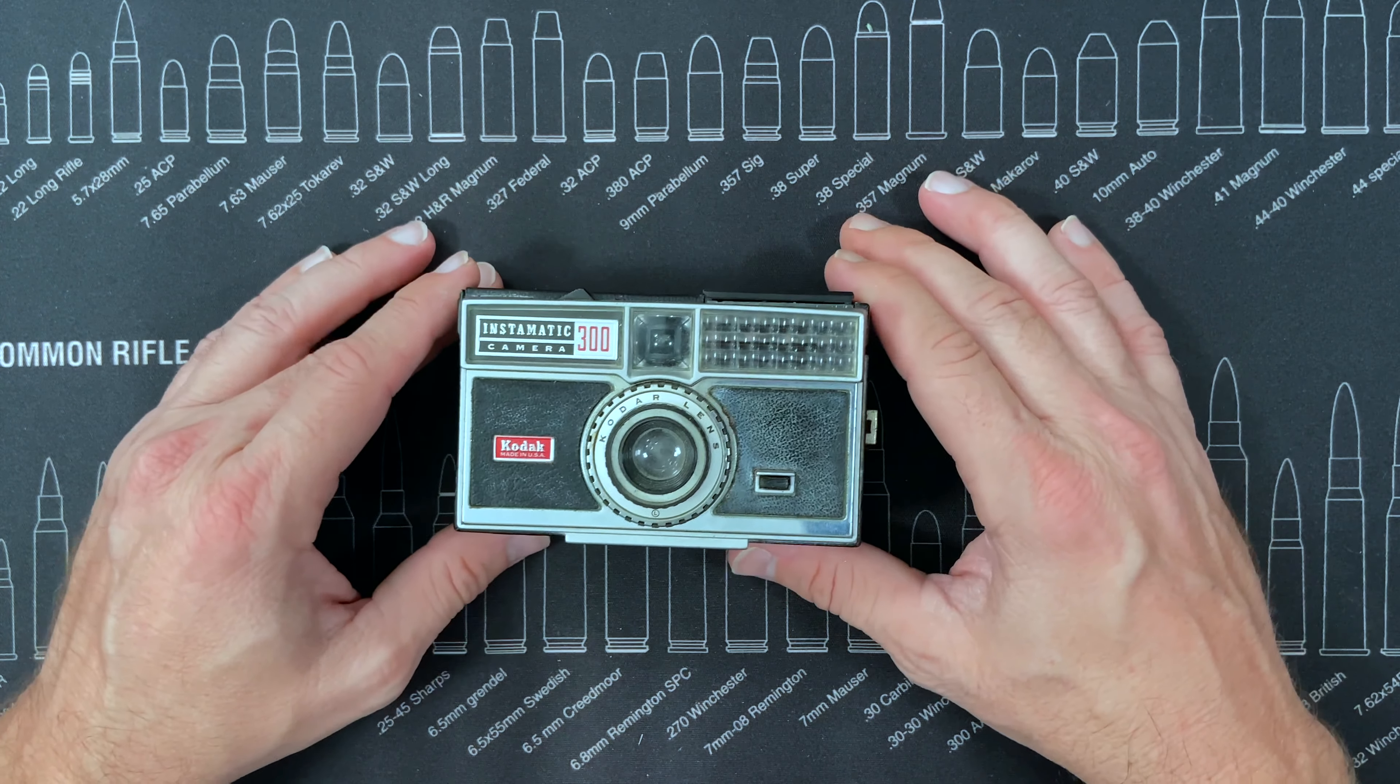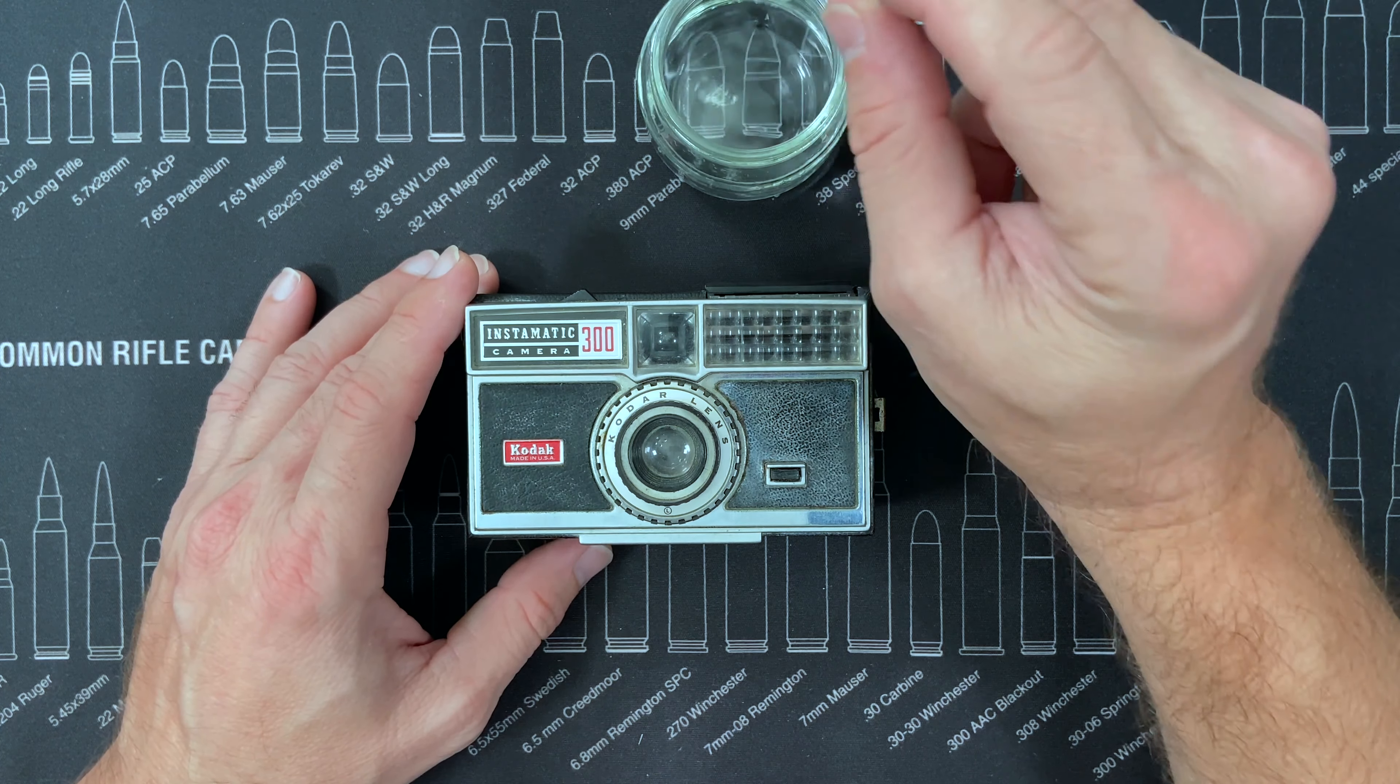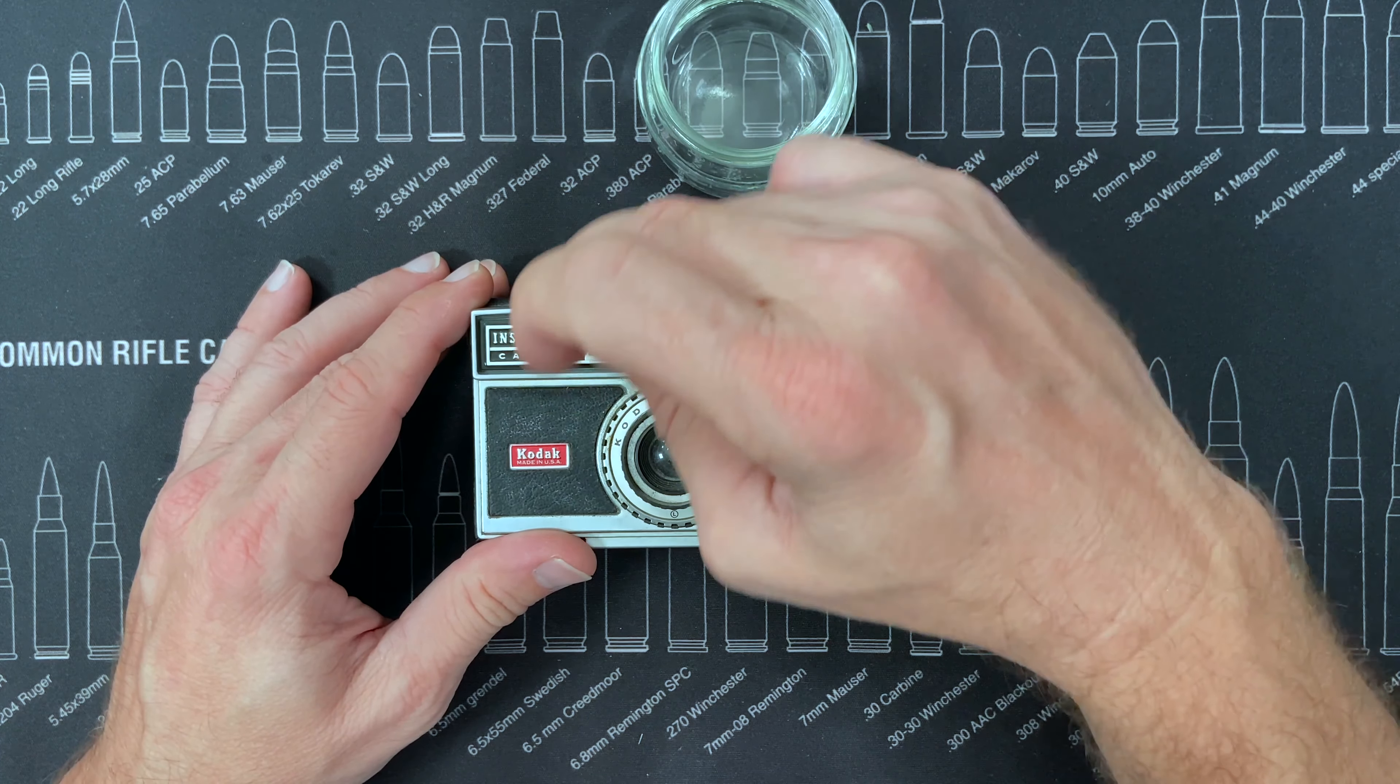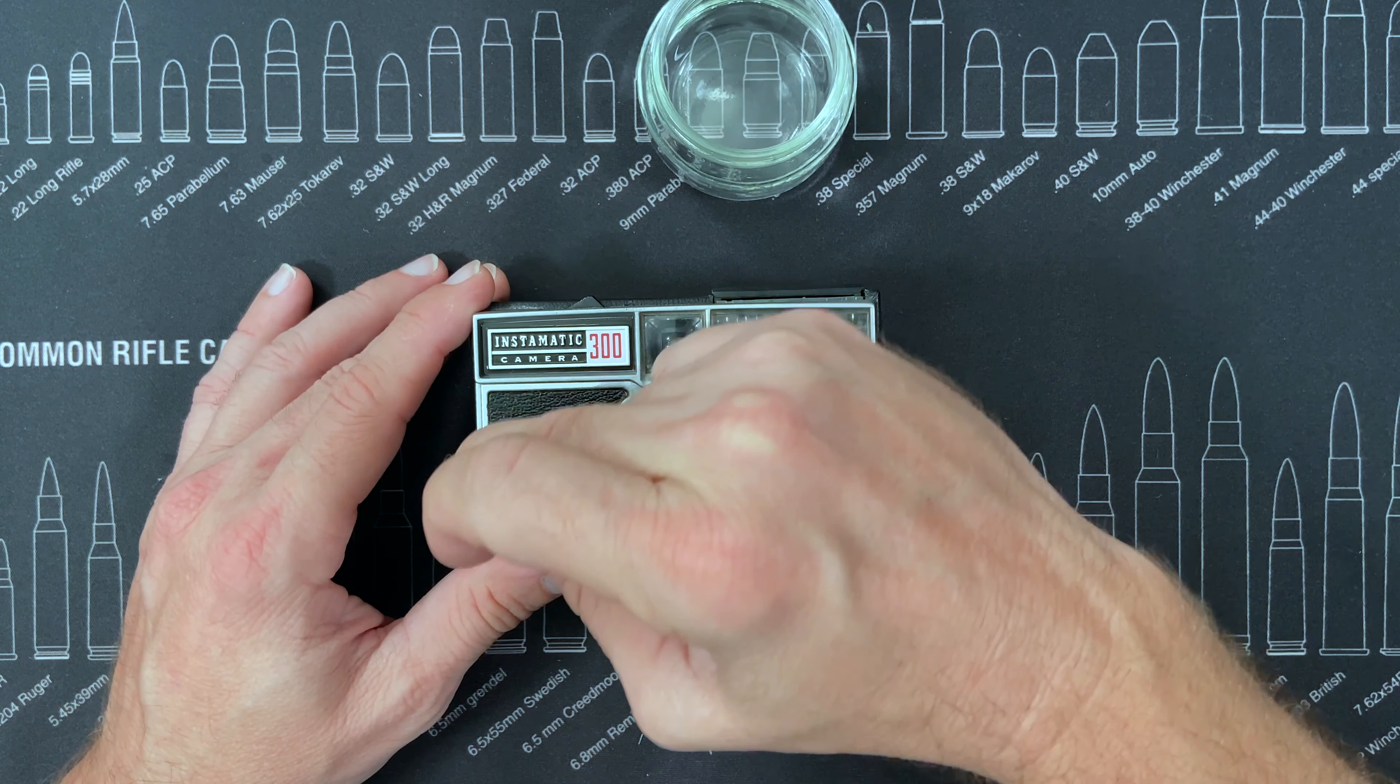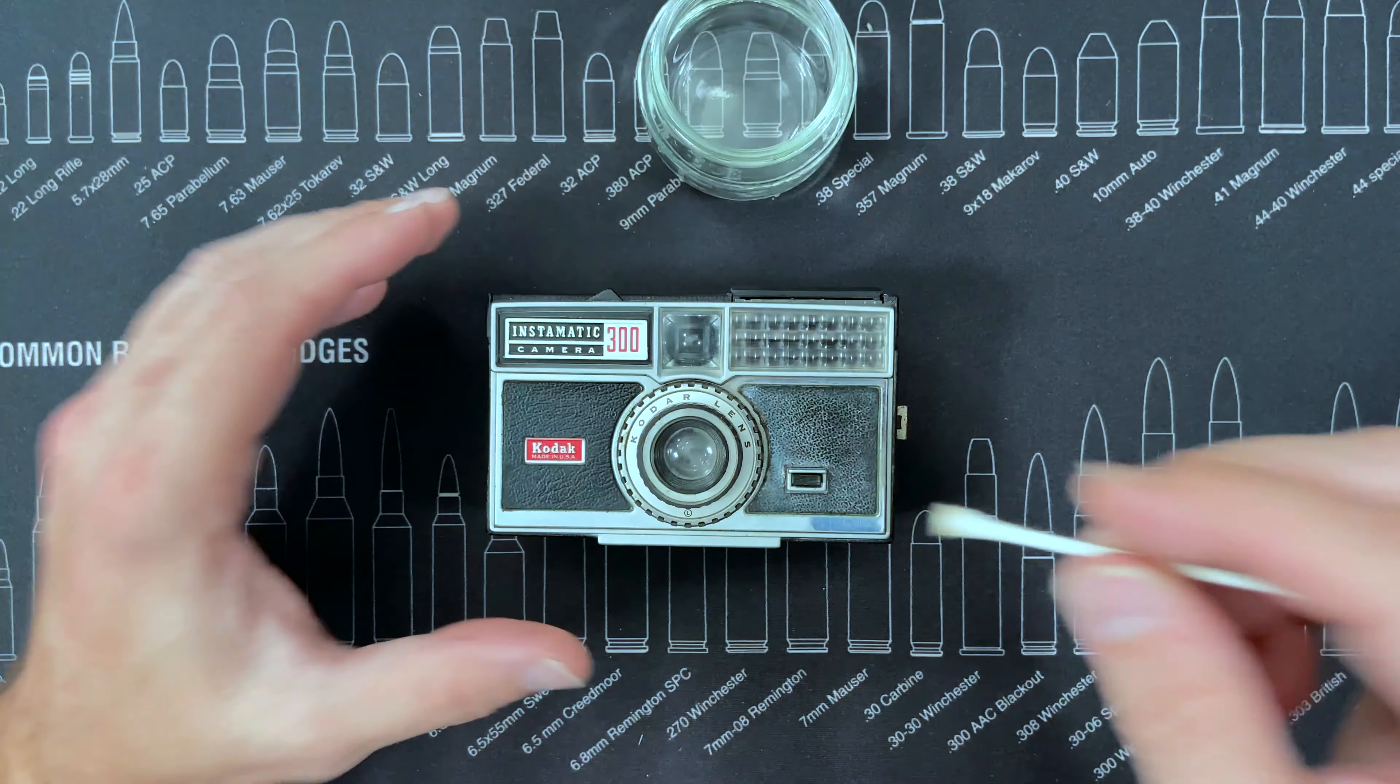All right, let's get cleaning up. First thing I like to do is bring out the old alcohol and a q-tip and we're just going to clean the dirt and the dust and the grime off of this guy. You can see some of this old plastic that's kind of like a leather - I mean look at the difference there just in having it be wet, the alcohol from this side to that side. And you can see this q-tip is already dirty.